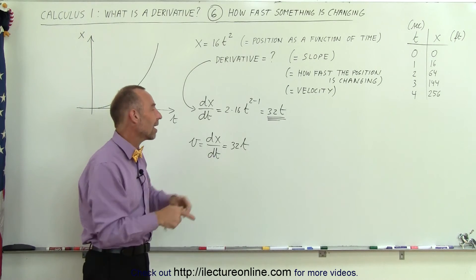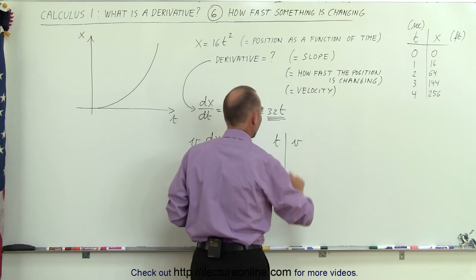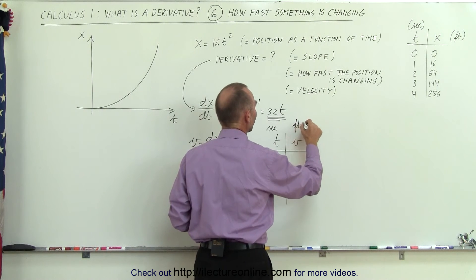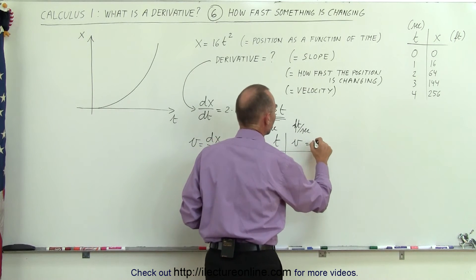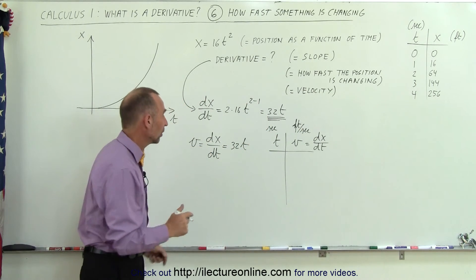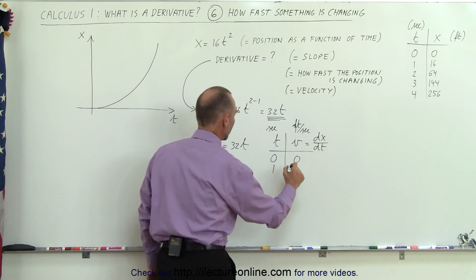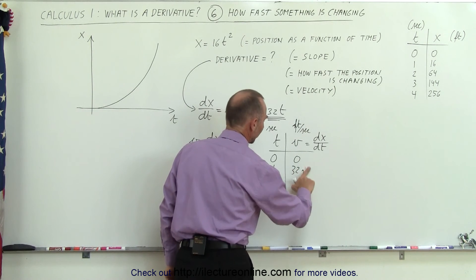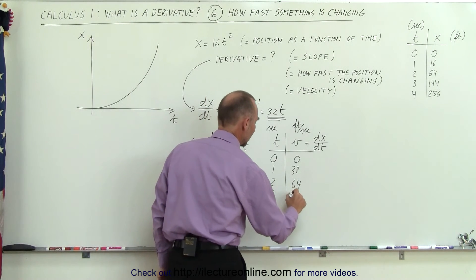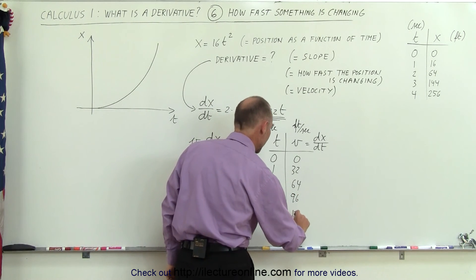All you have to do is plug in a particular value for time. Setting up a table of values, we plug in certain values for t and get corresponding velocities. Time is in seconds, velocity is in feet per second, and velocity equals the derivative of x with respect to time. When t equals 0, velocity is 0. When t equals 1, velocity is 32 feet per second. When t equals 2, it's 64 feet per second. At t equals 3, that's 96, and at t equals 4, that's 128 feet per second.